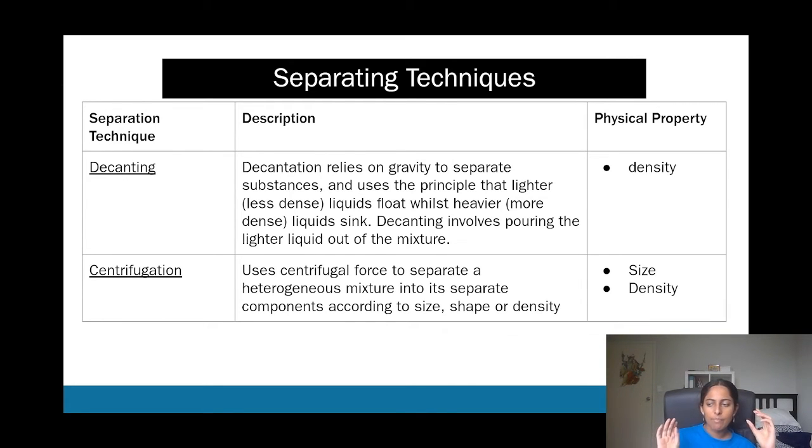So, that's where you have density being involved. That's the physical property. And pretty much the lighter liquid that has a lower density floats at the top. The heavier liquid, the more dense liquid is at the bottom. And you just pour the lighter liquid out first, and then you've separated the two layers.